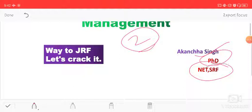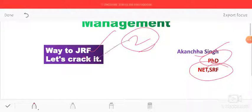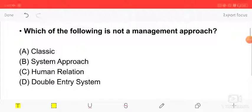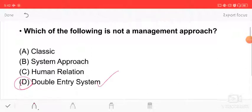Which of the following is not a management approach? Classical approach, system approach, human relation, or double entry system? The answer is double entry system. This is the catering used in food and catering services for the entry of selling prices and buying prices. This is a type of stock register, not a management approach.